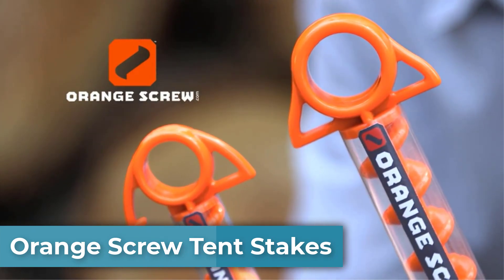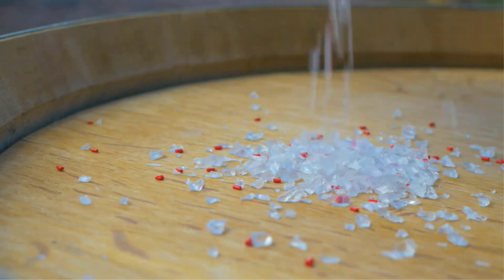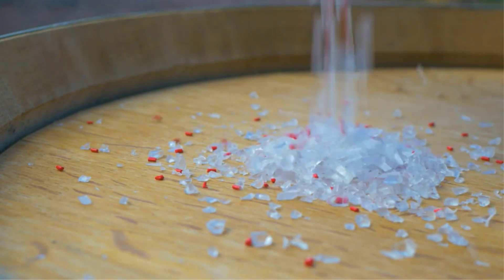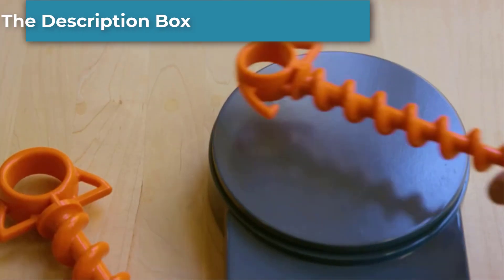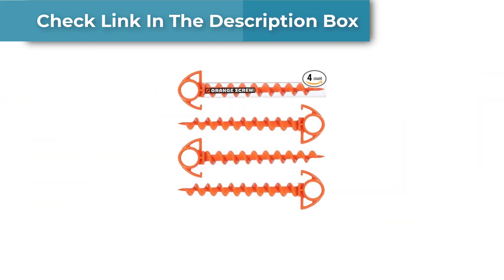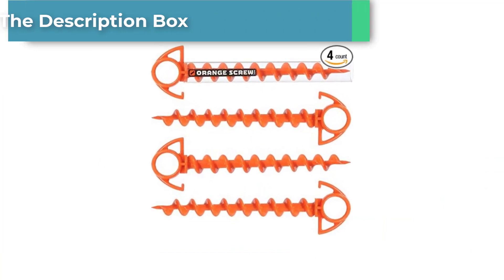Number 4. Orange Screw Tent Stakes. The Orange Screw is a fantastic ground anchor that provides reliable stability and support for outdoor activities. The small 4-pack tent stakes are perfect for camping, hiking, and other outdoor adventures where a secure tent is essential.